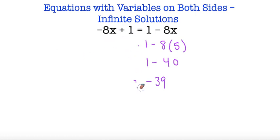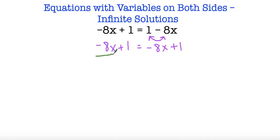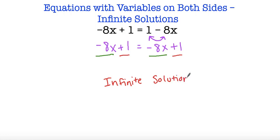So that's what we mean by infinite solutions — x can be any number. And that's because if we rearrange this, we have negative 8x plus 1 is equal to, if we swap these two terms, negative 8x plus 1. So we have the same equation equal to itself, and that's why x could be anything. On both sides I have negative 8x and positive 1. So the answer in this case wouldn't be x equals 5 or x equals 7 — it would simply be infinite solutions. That just means that x can be any number and this equation will always be true.